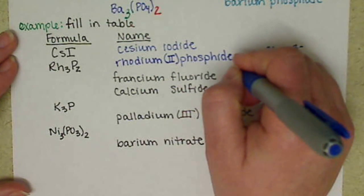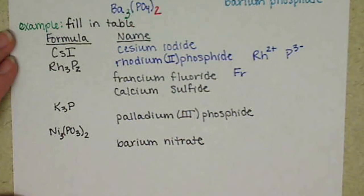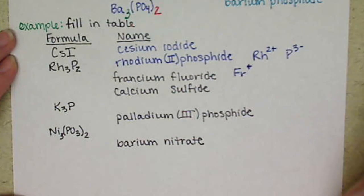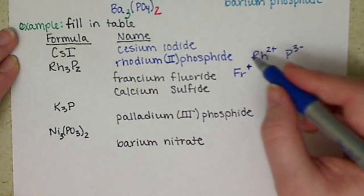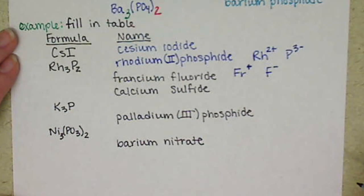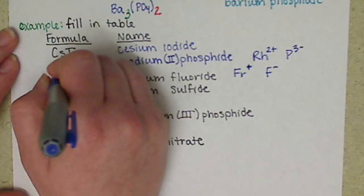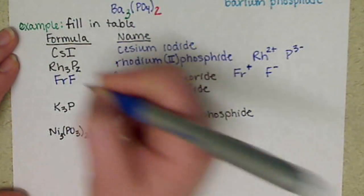Francium fluoride - francium is Fr, it's in group 1A, so it's going to have one valence electron that it's going to lose to form a +1 charge. The fluoride ion has a -1 charge, we just need a 1-to-1 ratio, so we have FrF.